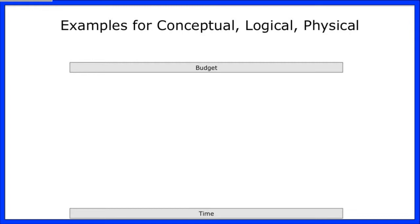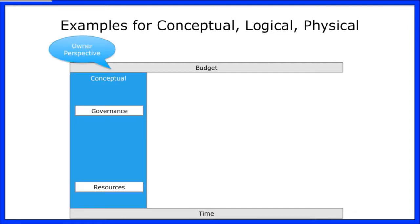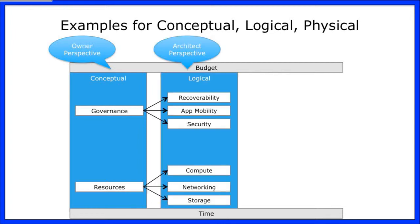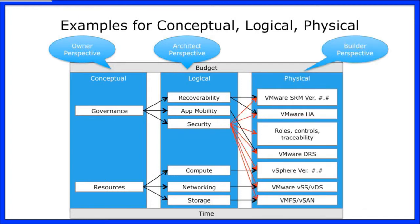Budget and time are two things that go across all three areas. We've got the owner's perspective — they're concerned about governance and resources. The architect then translates it into recoverability, app mobility, security, and so on. Then we finally get down to the physical design, where we're calling out specific vendor products, versions, and configurations. There can be a one-to-many or a many-to-one mapping once we get to that phase.